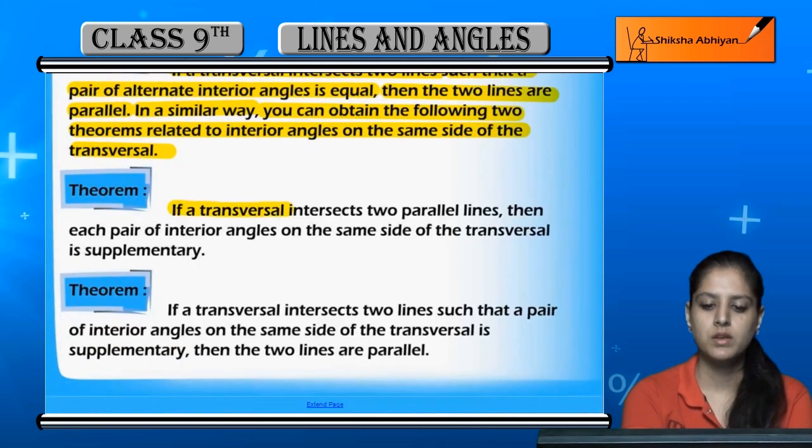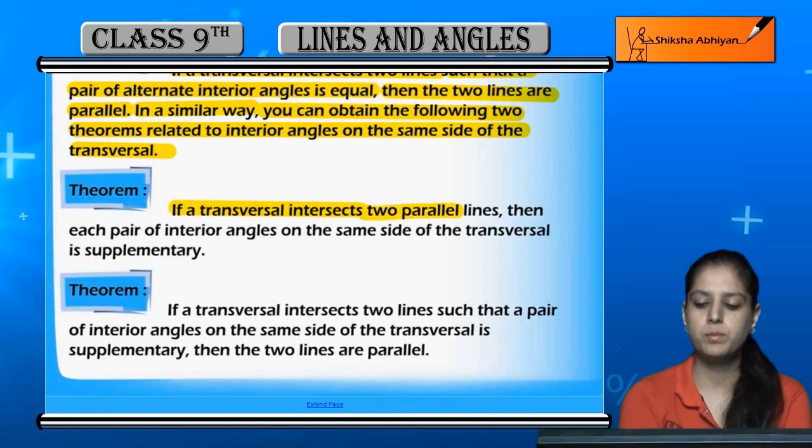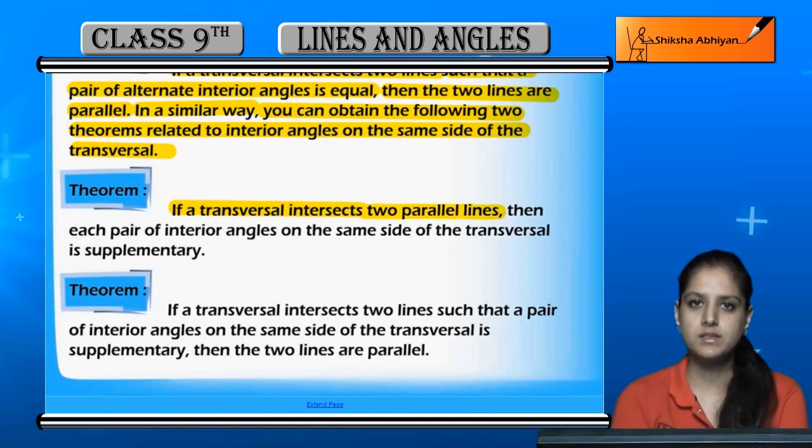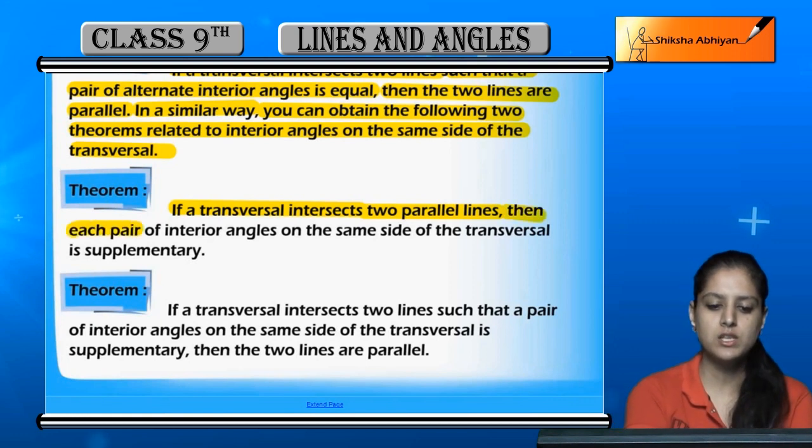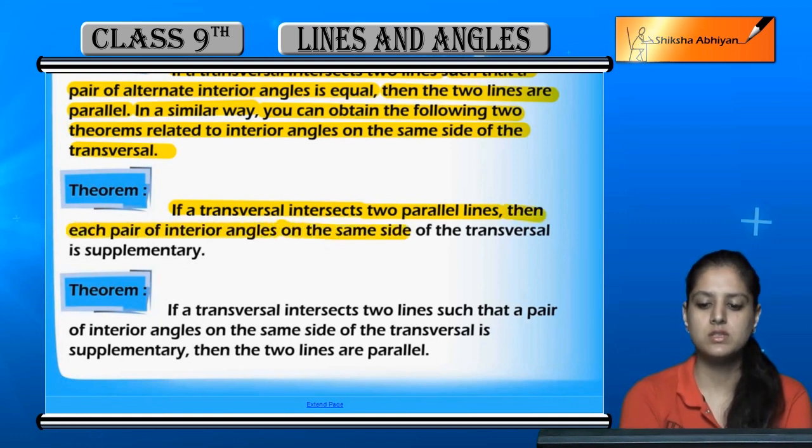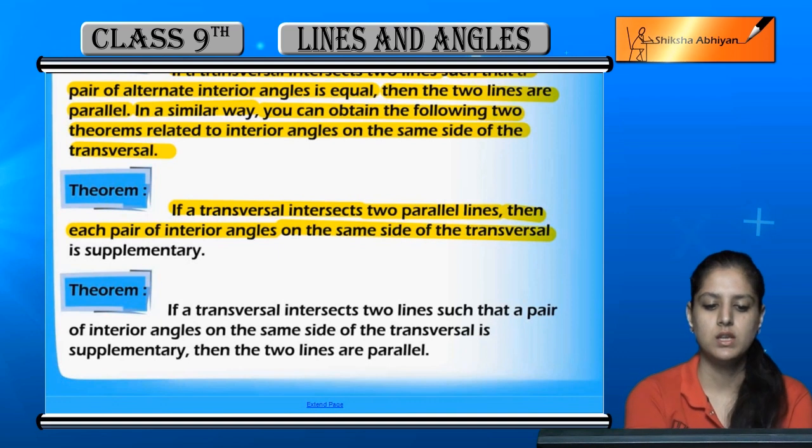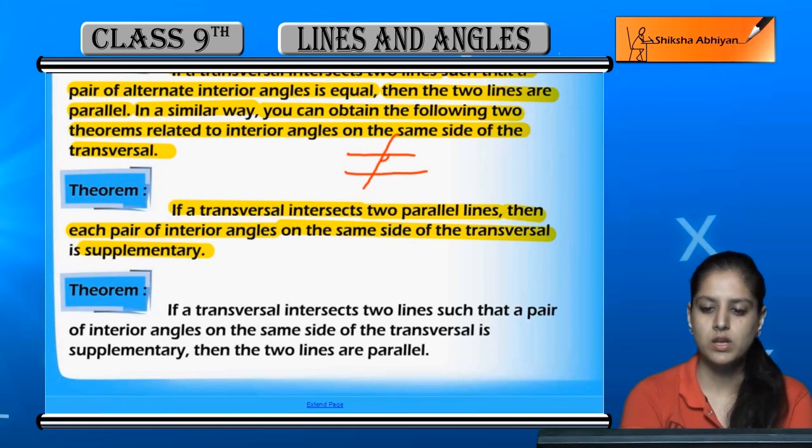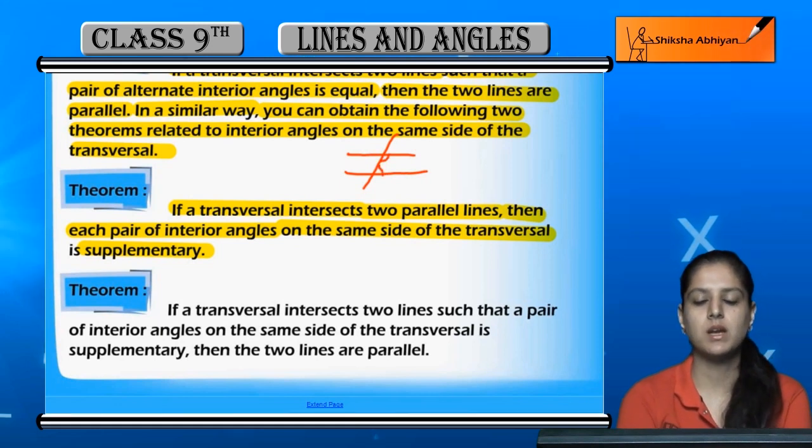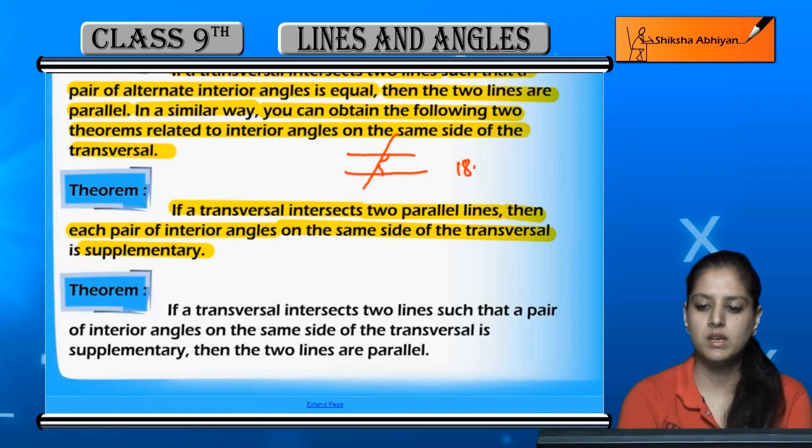First theorem: If a transversal intersects two parallel lines, then each pair of interior angles on the same side of the transversal is supplementary. If a transversal intersects two parallel lines, then their sum would be 180 degrees.